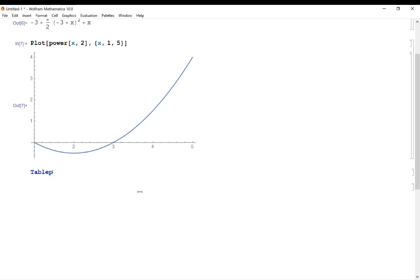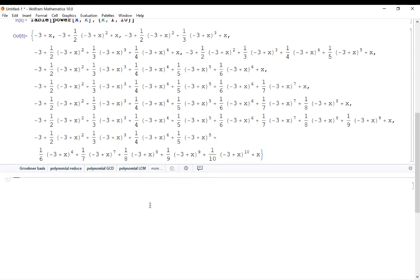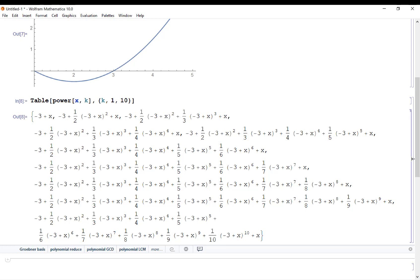What I want to do here is I'm going to make a table of my power functions. For example, if I let k go from 1 to 10, there I have the first 10 partial sums, which is kind of confusing. That's not really what I want to do.